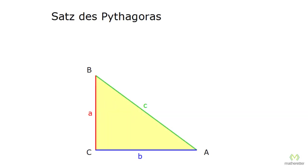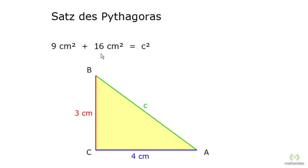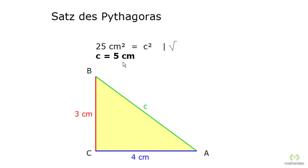Next, let us use this new knowledge. If the square of A — that is A squared — and the square of B — that is B squared — are added together, we must get C squared. In our example, side A was 3 centimeters and side B was 4 centimeters. Entering the values: 3 centimeters squared plus 4 centimeters squared equals C squared. That gives 9 square centimeters plus 16 square centimeters equals C squared, so 25 square centimeters equals C squared. Taking the root of both sides: the square root of 25 square centimeters equals C, so 5 centimeters equals C.